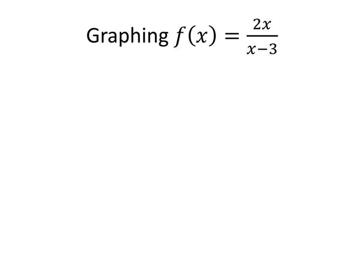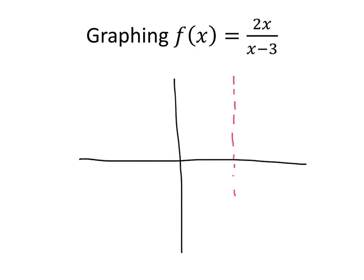Now let's put all of this information together and get a graph of f(x) = 2x divided by (x minus 3). We know it has a vertical asymptote at x equals 3, and a horizontal asymptote at y equals 2. Let's also find the y-intercept: f(0) = 2 times 0 divided by (0 minus 3), which equals 0. So one of the points on this function is (0, 0).